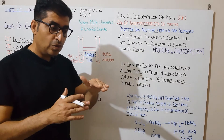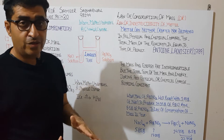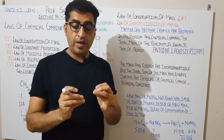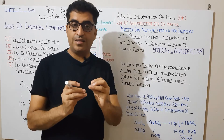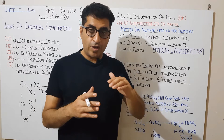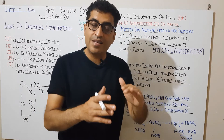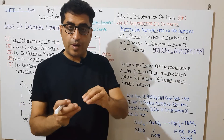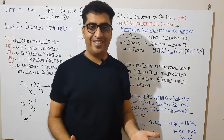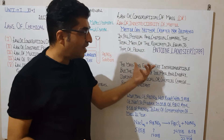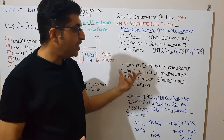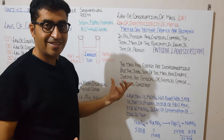If we apply this to nuclear reactions, the nucleus is involved and some part of the mass is converted into energy. Therefore, the modified form of the law is called the Law of Conservation of Mass and Energy — mass and energy are interconvertible, but the total sum of mass and energy during any physical or chemical change remains constant.